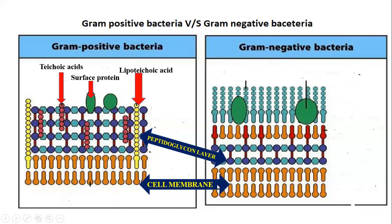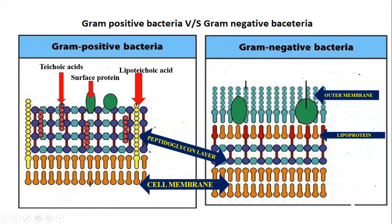Gram negative bacteria have a cell membrane and a peptidoglycan layer which is thinner — only 2 nanometers. They also have a lipoprotein that connects the outer membrane to the peptidoglycan layer, sitting between these two structures.